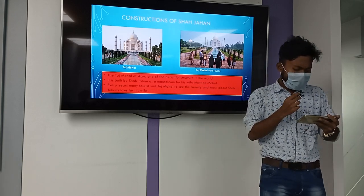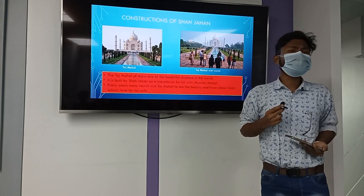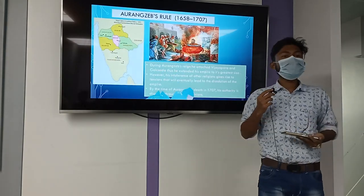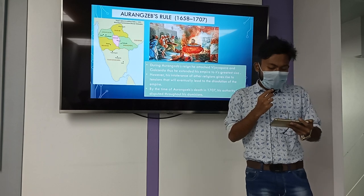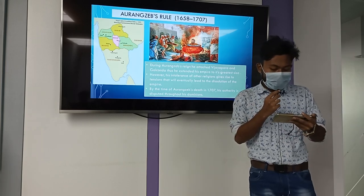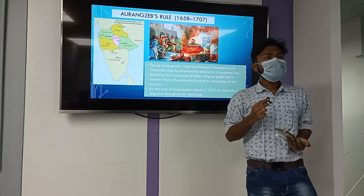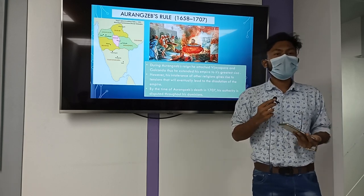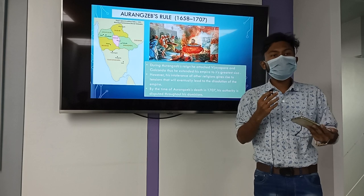Shah Jahan owned many royal treasuries and many precious stones like the Kohinoor. Aurangzeb was the last one who is called the Great Mughal Ruler. During Aurangzeb's reign, he annexed Bijapur and Golkonda, thus extending his empire to its greatest size. However, his intolerance of other religions gave rise to tensions that eventually led to the dissolution of the empire. He was the third son of Shah Jahan and Mumtaz Mahal. His religious intolerance gave rise to tensions that caused the dissolution of the empire.